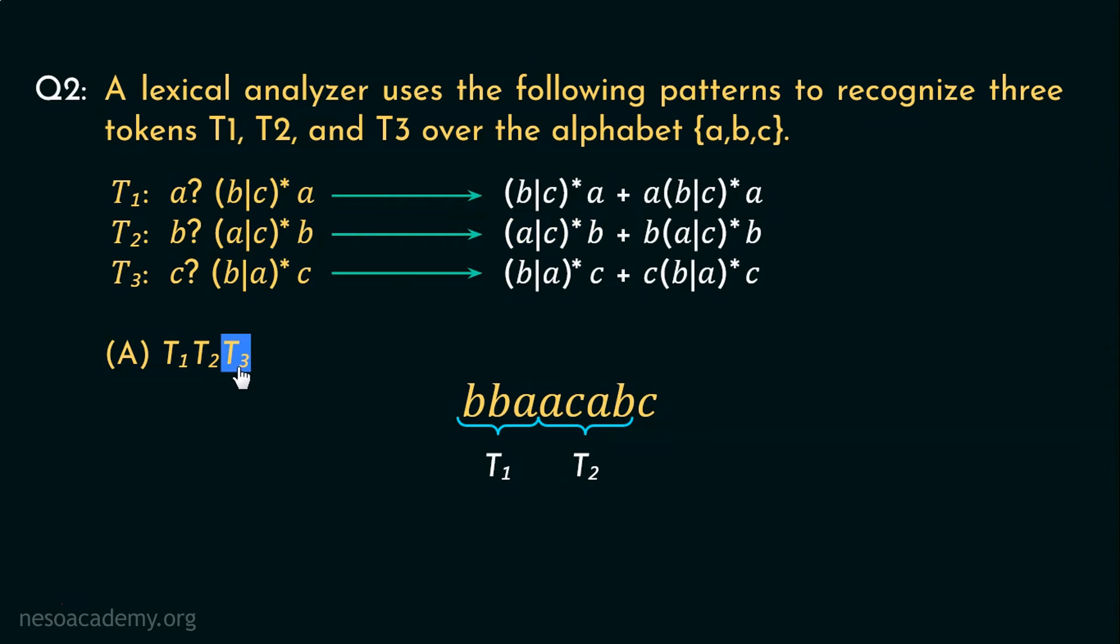Now, consider T3. In the string, only the symbol C is left. Now, if we select this regex portion, we will end up having at least two C's. That's why we are going to choose this one instead. So if (B or C) whole star derives nothing, we can still have this C. So T3 can represent C. So using T1, T2, T3, we can represent the string.